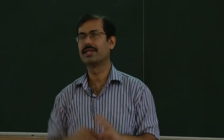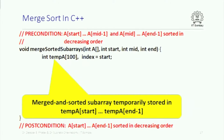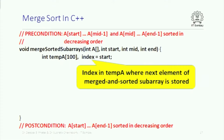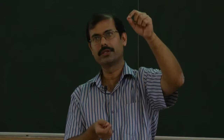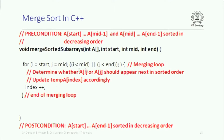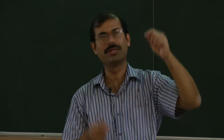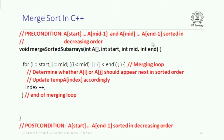The merged sorted subarray will be temporarily stored in tempA and finally copied back to A. The variable index is the index in that temporary array where the next sorted element should go. We initialize I to start and J to mid, because the two subarrays span from start to mid minus 1, and mid to N minus 1. We iterate as long as either I is less than mid or J is less than N — the increments happen inside the loop body. In every iteration, the next sorted element goes to its rightful place, so index increases.